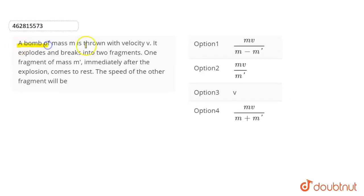This question - we have given a bomb of mass M is thrown with a velocity V. It explodes and breaks into two fragments. One fragment of mass m' immediately after the explosion comes to rest. The momentum of the other fragment will be what?